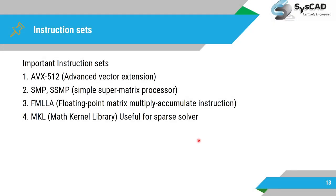Regarding instruction sets: AVX-512 (Advanced Vector Extension 512) is required for matrix calculations and is very useful for CAE problems, significantly reducing solution time. SMMP — Super Matrix Processor — is another instruction set helping with floating-point matrix multiply-accumulate instructions. Intel MKL (Math Kernel Library) is specifically useful for sparse matrix solvers in CAE simulations.